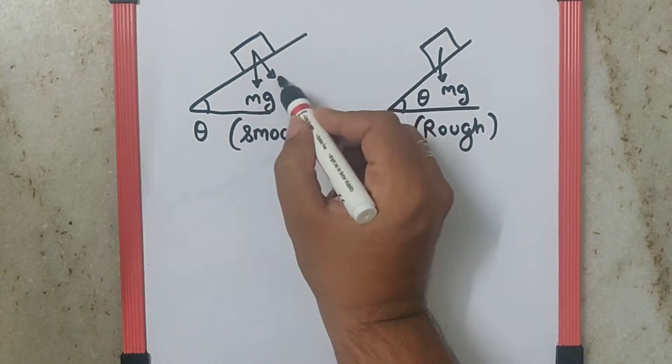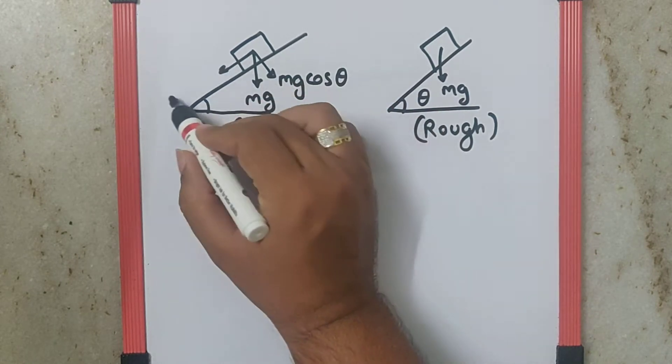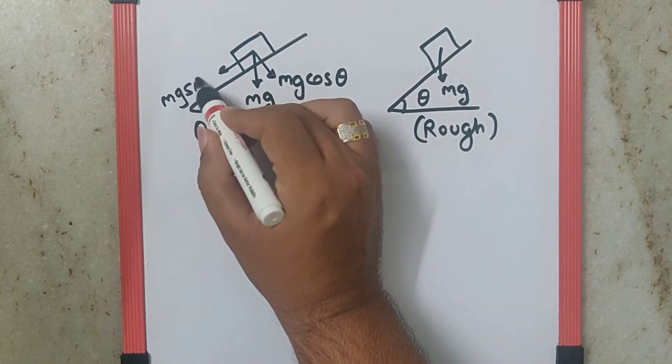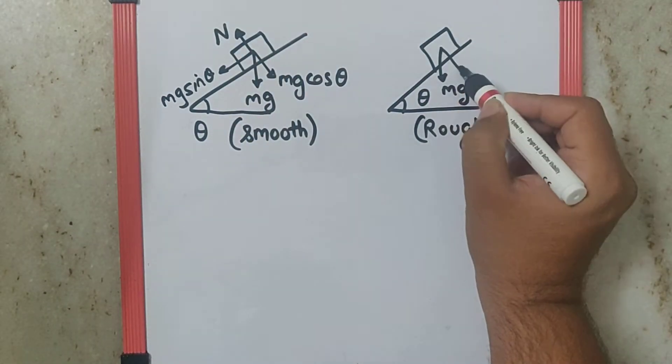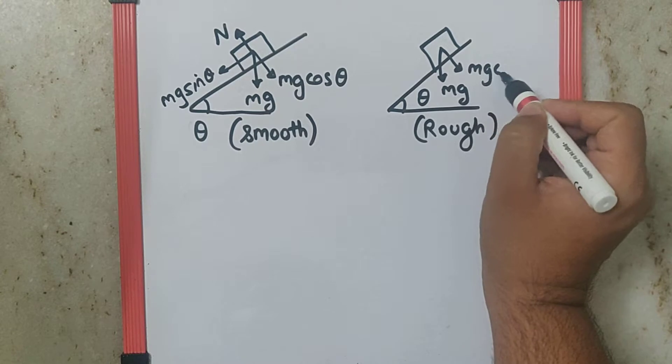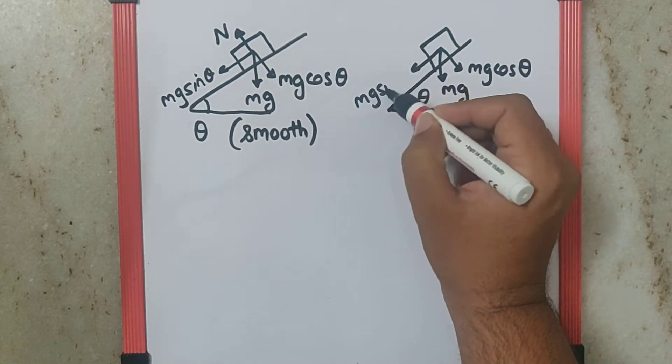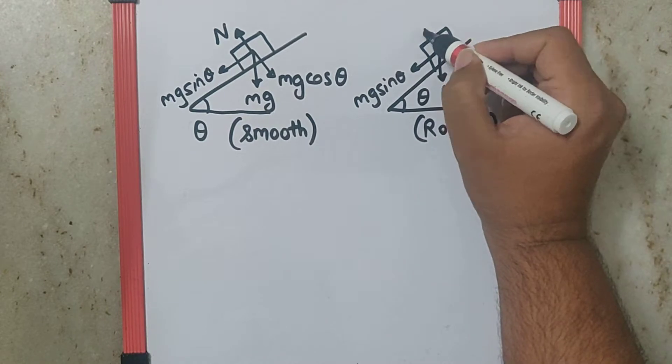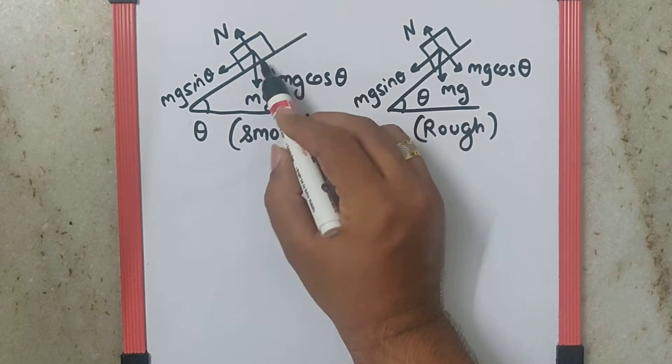Which can be resolved into two components: mg cos theta and mg sin theta, against which there will be a normal reaction. The same thing can be drawn over here. There will be normal reaction too, but here since the surface is smooth, there is no friction.